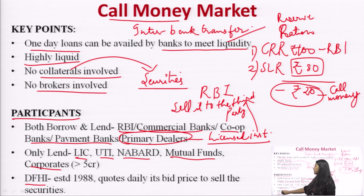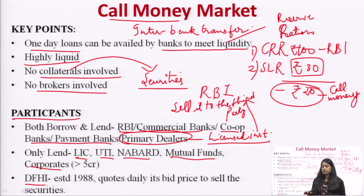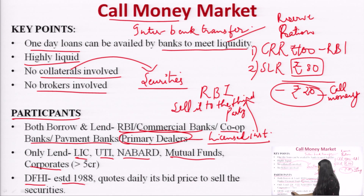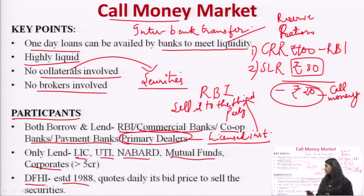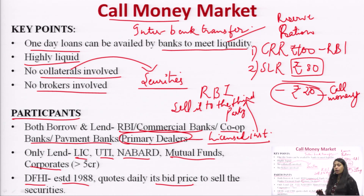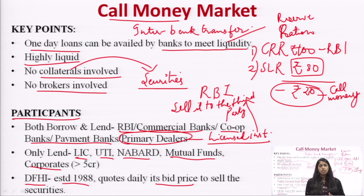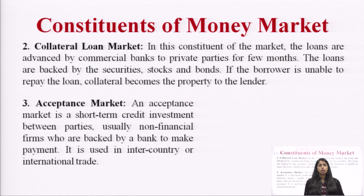Another participant in the call money market is DFHI — the Discount and Finance House of India — established in 1988. On a daily basis, DFHI bids their price, stating the security they want to sell and its price. If you are interested, you can buy it. These are the participants of the call money market.